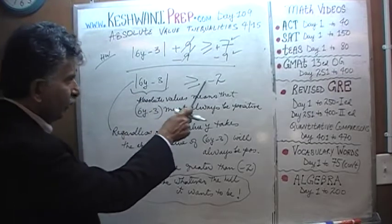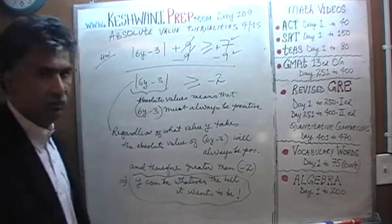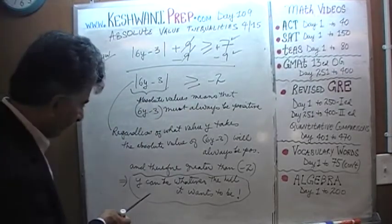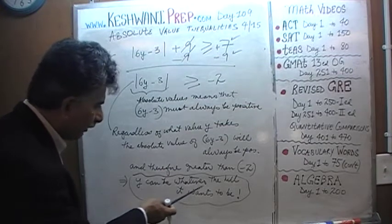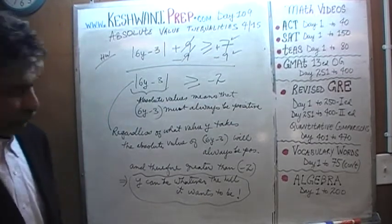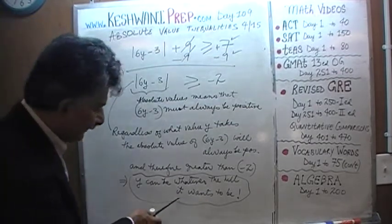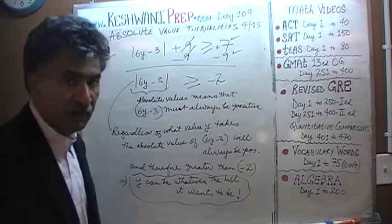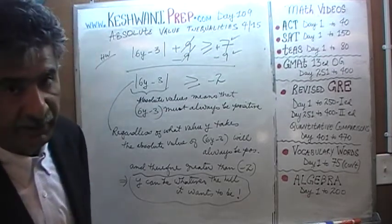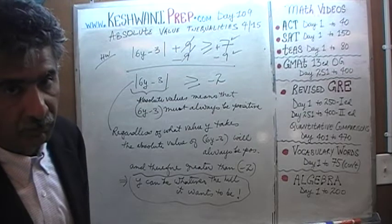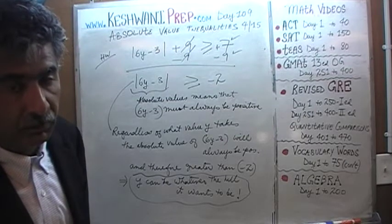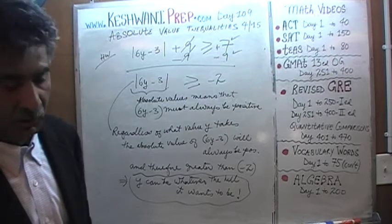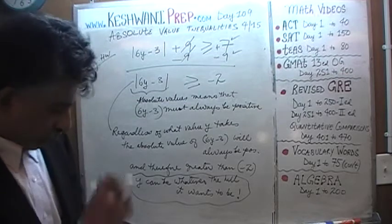Because this is always going to be positive, it is always going to be greater than negative 2, regardless of what value Y takes. Y can be whatever it wants to be. That's not how a mathematician will speak — that's not how you'll find the solution in a mathematics textbook. So now we have to write down the solution in the terminology of mathematics, in the jargon of mathematics, which we will do up top.